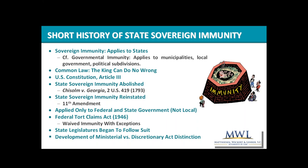So in 1793, sovereign immunity was abandoned. In response, Congress proposed and three-fourths of the states ratified the 11th Amendment. The 11th Amendment states that the judicial power of the United States shall not be construed to extend to any suit in law or equity commenced or prosecuted against one of the United States by citizens of any other state, or by citizens or subjects of any foreign state. This reinstated the states' sovereign immunity, at least to the extent that Article III had encroached upon it.